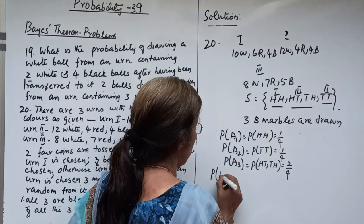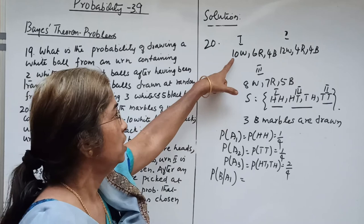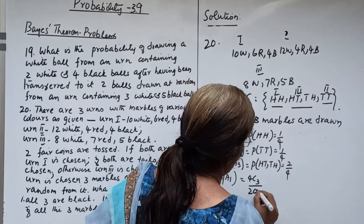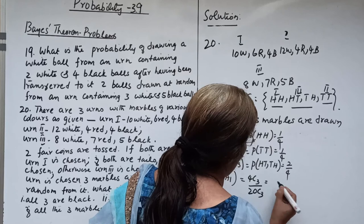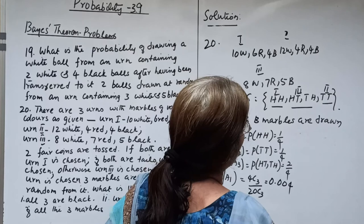Now P(B given A1): from urn 1 (10 white, 6 red, 4 black — total 20 balls), drawing 3 black marbles gives 4C3 divided by 20C3, which equals 4 by 1140, that is 0.004. P(B given A2): from urn 2 (12 white, 4 red, 4 black — total 20 balls), drawing 3 black gives 4C3 divided by 20C3, which is also 4 by 1140, that is 0.004.